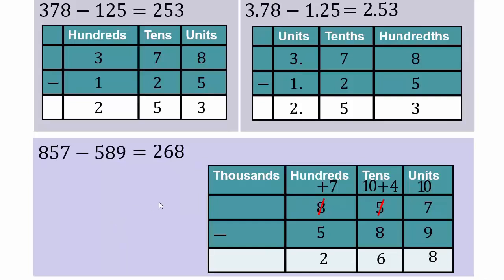An important question: what happens if that 7 hundreds were a number smaller than 5 — with nothing left to borrow? We'll get to that soon. In addition, you had carry-overs because you were bundling groups of 10. Now we are unbundling so that groups of 10 move to a lower unit, which allows us to perform decimal number subtraction.